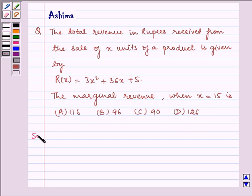Now let us proceed on to the solution. It is given to us that R(x) = 3x² + 36x + 5, where R(x) is the total revenue.